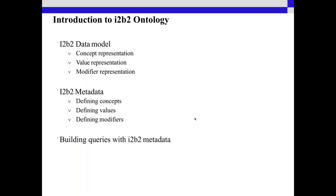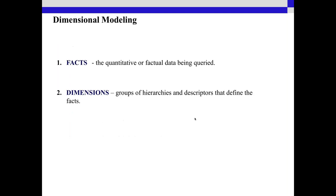The I2B2 ontology is broken into two different sections. You have the data model, which has the concept representation, the values, and modifiers. And then you have the metadata, which contains the concepts, defines the values and defines the modifiers. One section is the actual data with all the concepts associated to it — like ICD-10 I54, a diagnosis for hypertension — and the other is the ontology, which includes the name and the parent-child relationships.